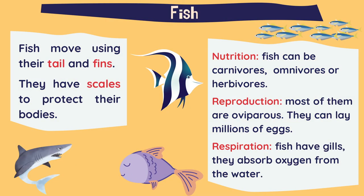Fish move using their tail and fins, like we can see here in the shark. They have scales to protect their bodies. In terms of nutrition, fish can be carnivores, omnivores or herbivores, the same as mammals. With reproduction, most of them are oviparous — they can lay millions of eggs. And for respiration, fish have gills; they absorb oxygen from the water, which is how they can breathe underwater.